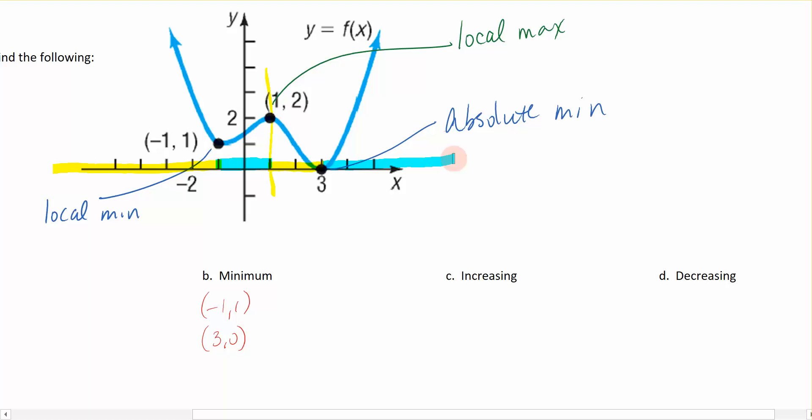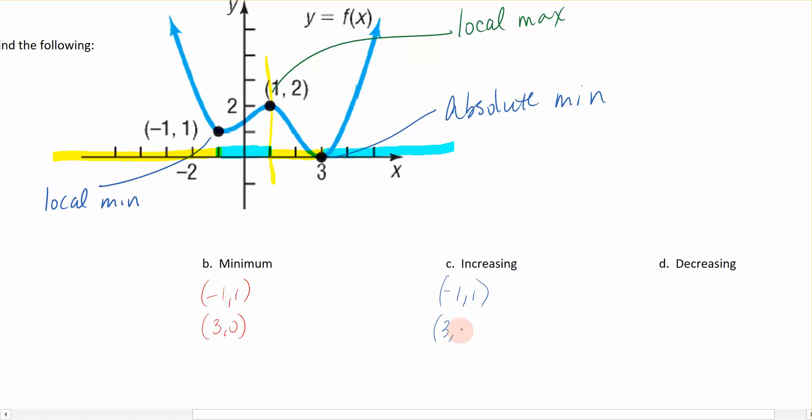So how do I write that again in interval notation? If we wanted to just talk about increasing because that's what comes next here, that was my blue highlighted areas. We are increasing between the values negative 1 and 1. So we are increasing from negative 1 to 1 and we are increasing again from 3 to infinity.